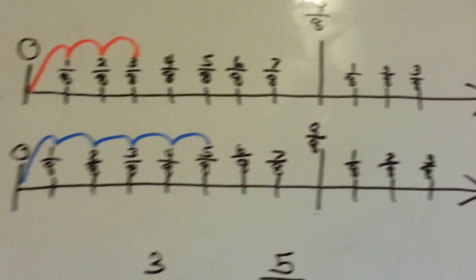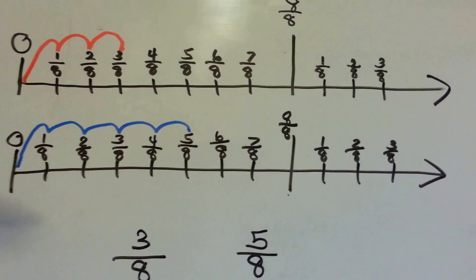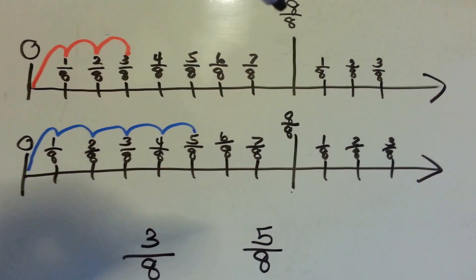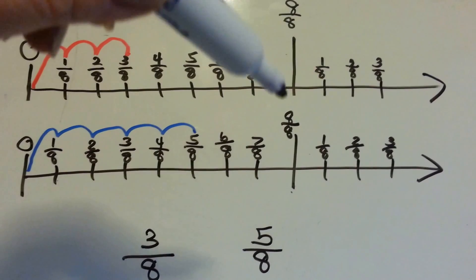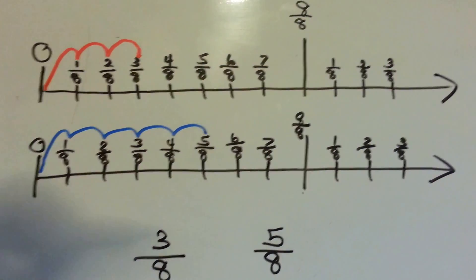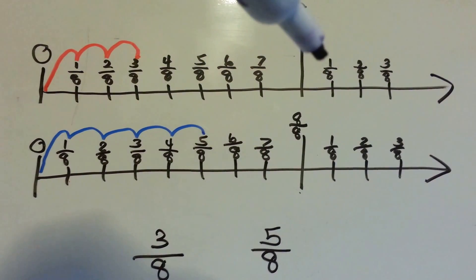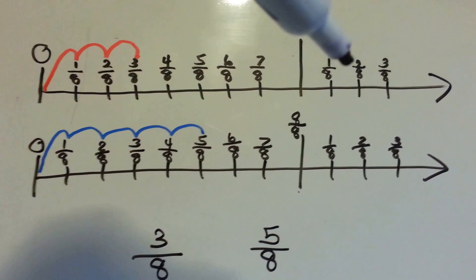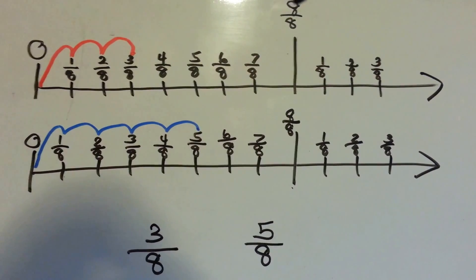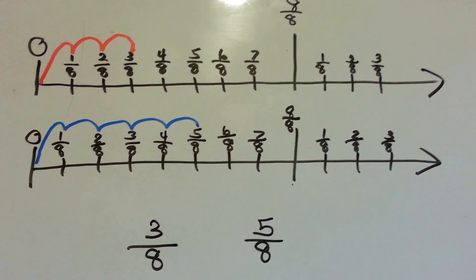Let's look at this number line. Here's zero, and here's eight-eighths, because that's one whole. When the numerator and the denominator are the same, that means it's one whole. We have one-eighth, two-eighth, three-eighth, four-eighth, five-eighth, six-eighth, seven-eighth, eight-eighth. This would be nine-eighths, ten-eighths, eleven-eighths. Which would be like one and three-eighths — eleven-eighths. See how it keeps going on the number line?